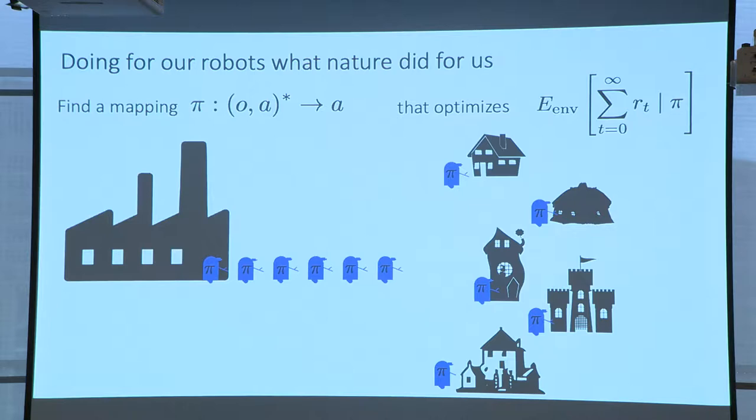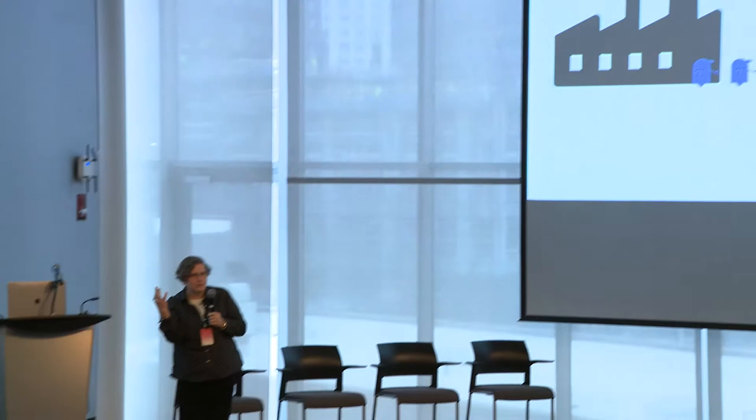And one way to think about that is to think about the whole distribution of environments that my robots are going to have to go into. So if I'm selling robots, so I'm the Acme robot factory, and I'm delivering robots with some program in their head, people are going to take them home, and they're going to take them home to all different kinds of homes. And whatever program I put in the head of the robot is going to have to work in all those places. And so what kind of a program should that be? Well, it's probably going to have to do something that feels like learning.